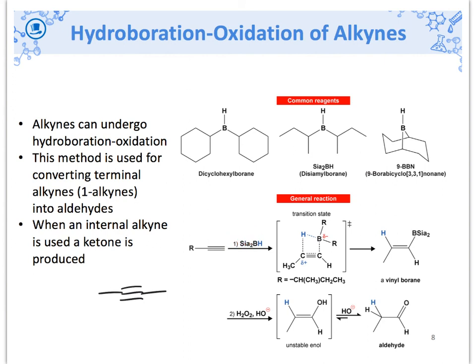The pi bond reacts - if we just draw BH3, the pi bond reacts, the H goes there. We end up with boron - the syn addition, the boron and the H on the same side. We don't even know the mechanism for the second step, but the H and O end up on the same side, and then that tautomerizes into the aldehyde.